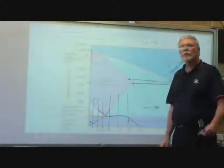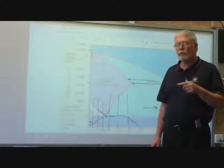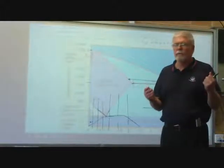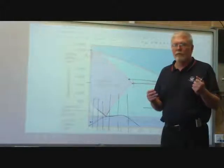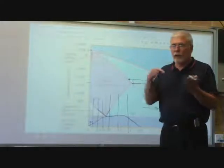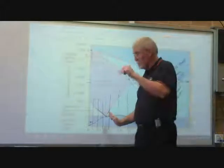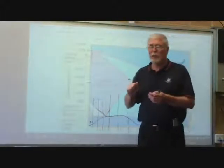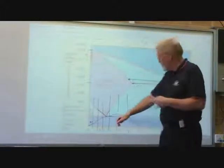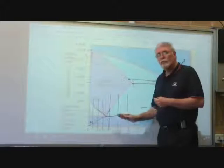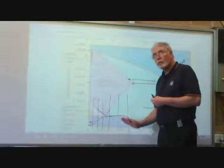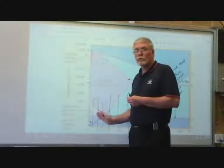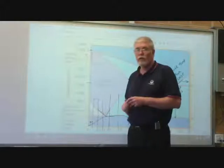Most steels are to the left of the eutectoid. What's to the left called? Below the eutectoid is hypo-eutectoid — think 'hypodermic,' under the skin, below. Above or beyond the eutectoid is hyper-eutectoid — think 'hyperspace,' over the top. So your high carbon tool steels are hyper-eutectoid steels. Your dead mild, mild, low carbon steels and medium steels are all hypo-eutectoid steels, below the eutectoid.